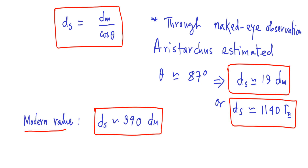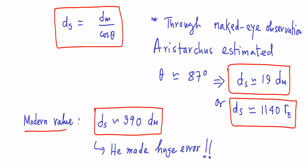In modern measurement, the distance to the Sun is approximately 390 times the distance to the moon, so clearly Aristarchus made a huge error here — unlike his measurement of the distance to the moon, where he was quite accurate, even using approximate values of pi and rudimentary trigonometry. In modern measurement, the angle theta is approximately 89.9 degrees. For values of theta near 90 degrees, the term one over cosine theta varies very rapidly even for a small variation of theta, and that is why Aristarchus made such a large error in this case.